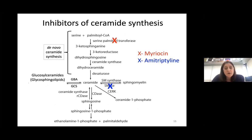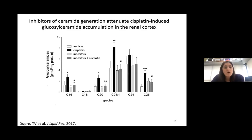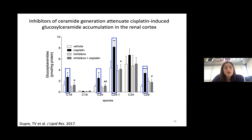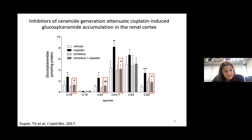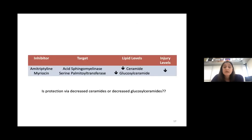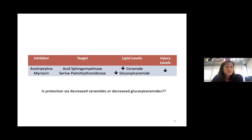One thing I want to point out is that it's not just ceramide going up — what happens with the other species? When we looked at hexosylceramides, we found they were also increased with cisplatin, and they were not increased when inhibitors of ceramide synthesis were used. So we don't know what the damage is due to: is it ceramide, glucosylceramide, or both?